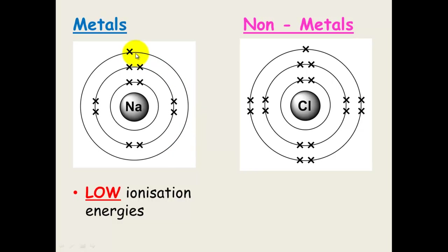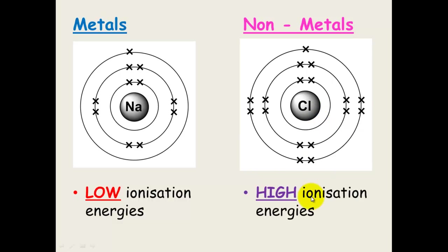Sodium wants to lose that electron, so only a low amount of energy is required — it has low ionization energy. Chlorine, on the other hand, doesn't want to get rid of its electrons, so it needs a large amount of energy to remove them. Non-metals have high ionization energy because chlorine wants to gain an electron, not lose one, so pulling an electron away requires a high amount of energy.